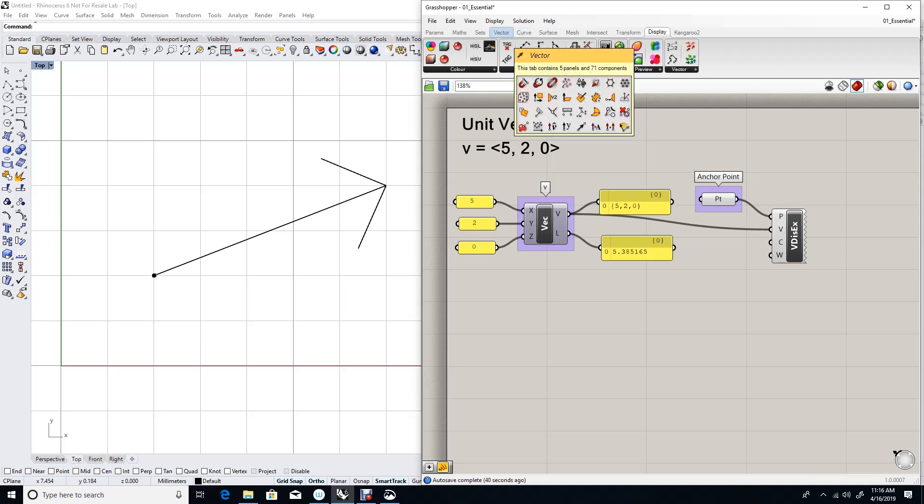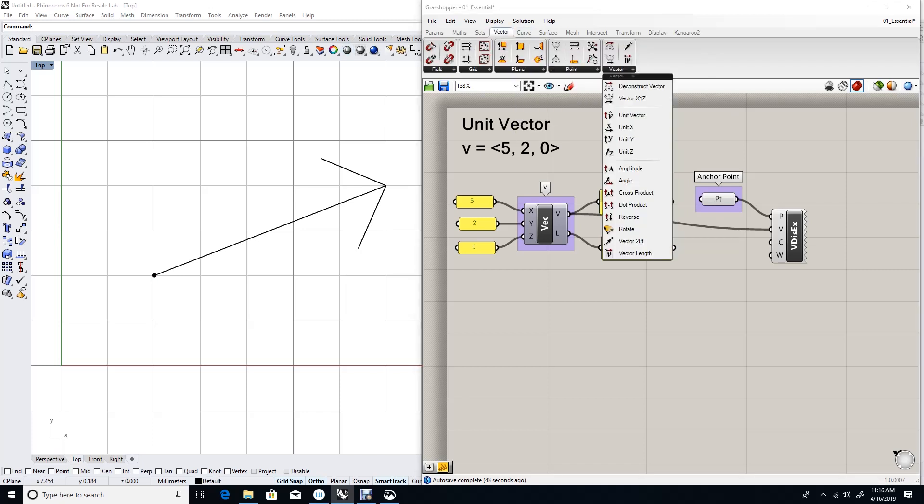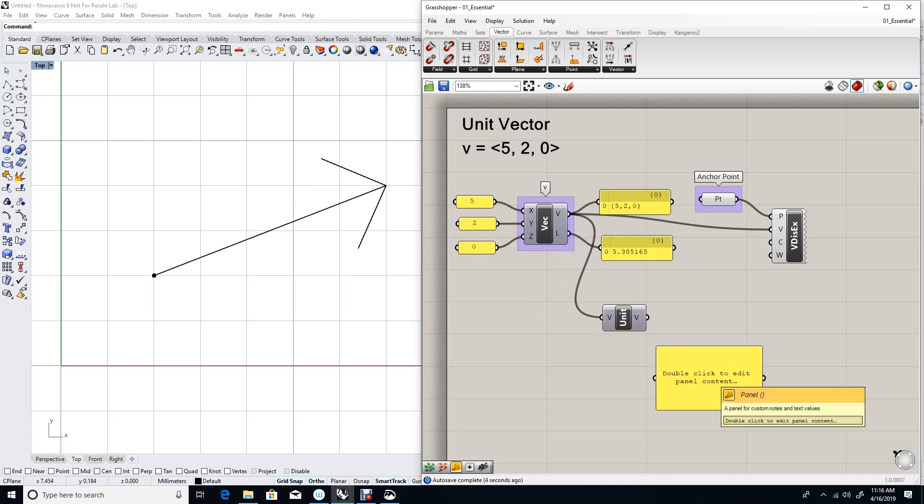In Grasshopper, under vectors, we have the component unit vector. What unit vector does, it takes a vector as an input and gives you a new vector as an output. Let's see what that vector looks like. It is approximately 0.9 comma 0.3 comma 0. And that vector should go in the same direction as the original vector. Let's feed it into the display.